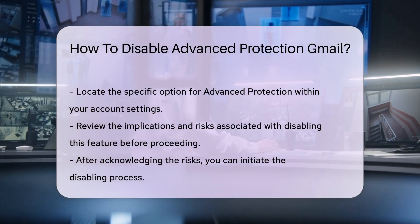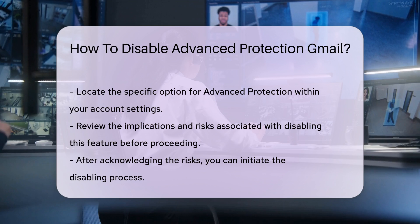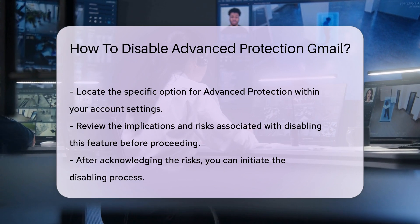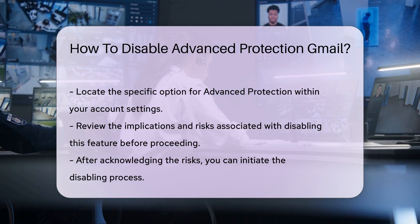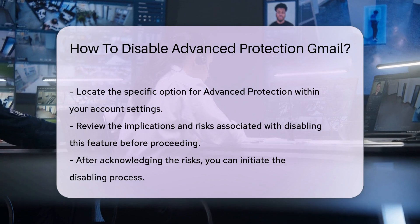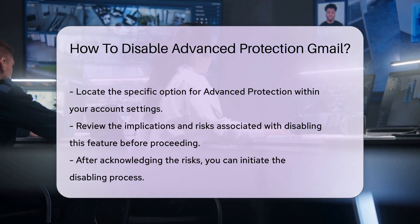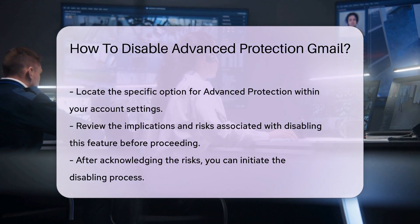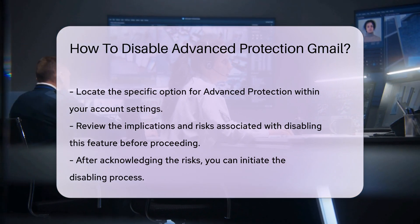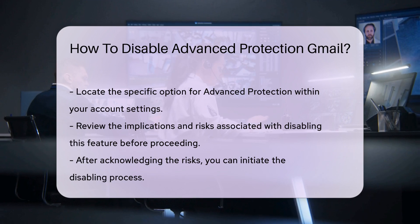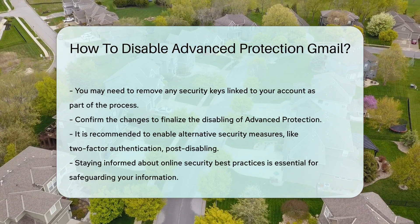Once you select this option, you will be prompted to review the implications of disabling this feature. It is crucial to read through these details carefully. After acknowledging the risks, you will be able to proceed with the disabling process. Following this, you may need to remove any security keys associated with your account. This step is important, as it ensures that your account is no longer tied to the Advanced Protection settings.